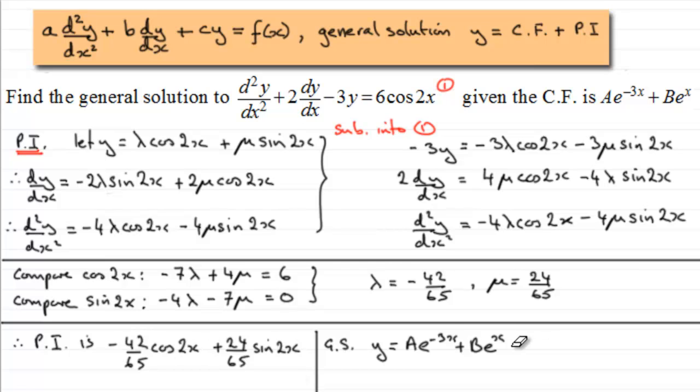So instead of it being a plus, we've now really got minus 42 over 65 then of cos2x. And then plus 24 over 65 of sin2x.